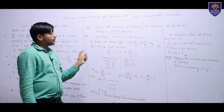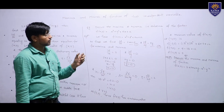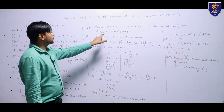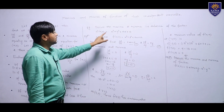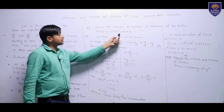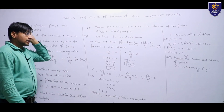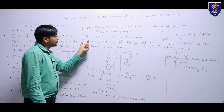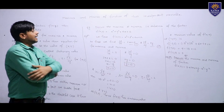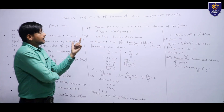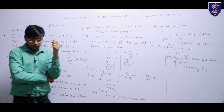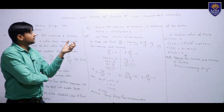Let us see the example. We are asked to discuss the maxima and minima, that is, the extrema of the function f(x,y) = x² + y² + 6x + 12. We will find the maximum and minimum of this function of several variables.